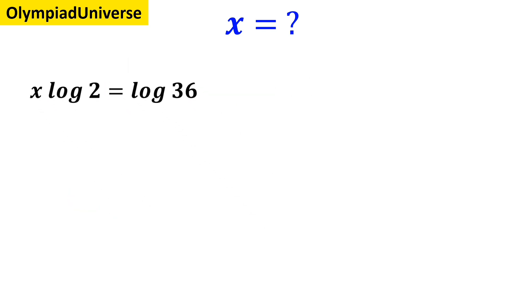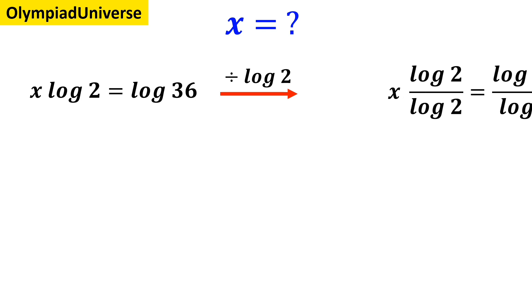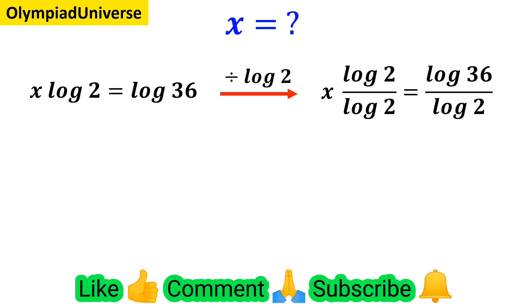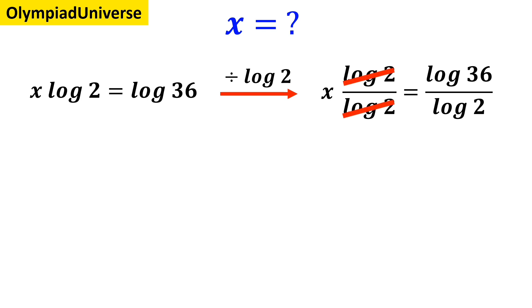Now we divide both sides of the equation by log of 2, which becomes x times log of 2 over log of 2 equals log of 36 over log of 2. The log of 2 terms cancel out, and this expression simplifies to x equals log of 36 over log of 2.